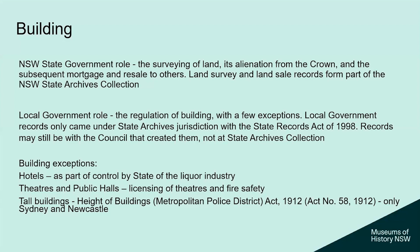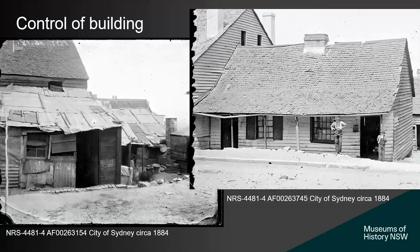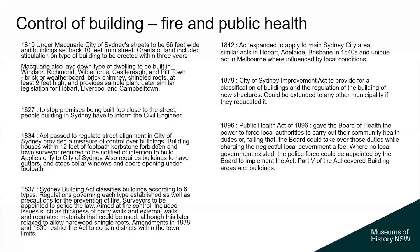The Height of Buildings Act came into Sydney in 1912 and in the 1950s was extended to Newcastle. There are three themes in the control of buildings. The first two are that they don't want people building on footpaths and roads — this seems something we take for granted, but it didn't always happen. The second theme is fire prevention. In 1810, 1827 and 1834 there were acts by the colonial government to stop people building on roads and footpaths, applied mainly in the area now known as the City of Sydney.